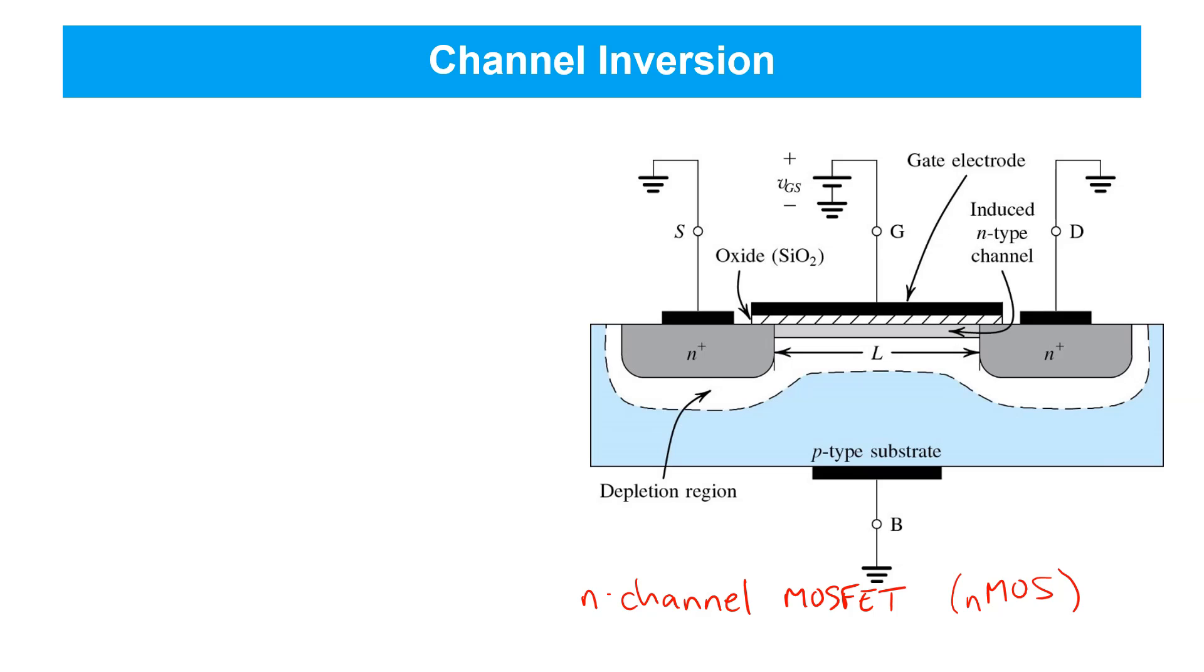The minimum voltage, VGS, required to induce a channel is called the threshold voltage and is represented by the symbol V subscript T. You'll sometimes see the letter N in the subscript as well to indicate that this is an N-channel MOSFET.